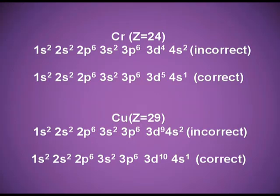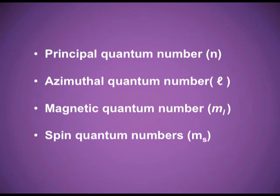The other example is copper, atomic number 29. As per the three rules its configuration would be 1s², 2s², 2p⁶, 3s², 3p⁶, 3d⁹, 4s² — but this is incorrect again. After transferring one electron from 4s to 3d, the 3d becomes 3d¹⁰, the fully-filled state, which is more stable. So while writing electronic configurations, we must keep all four points in mind.